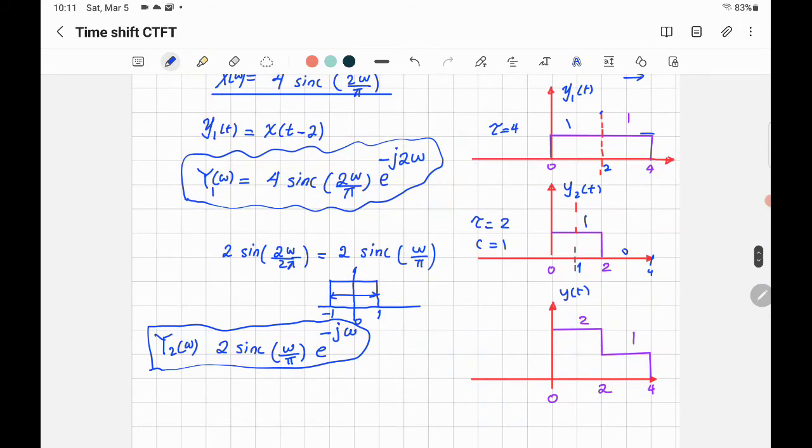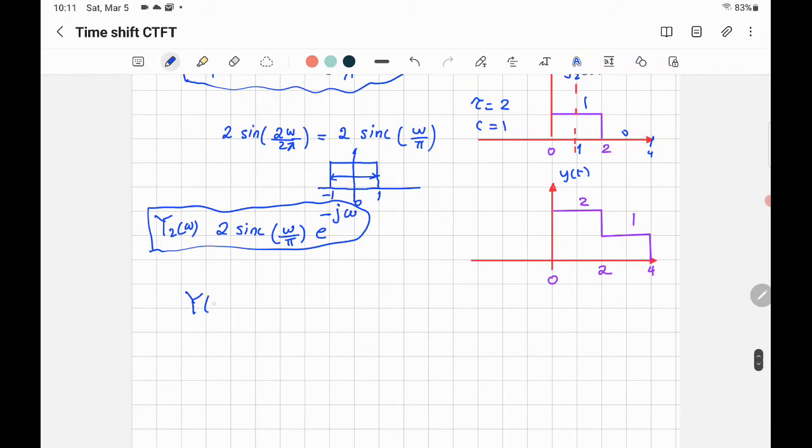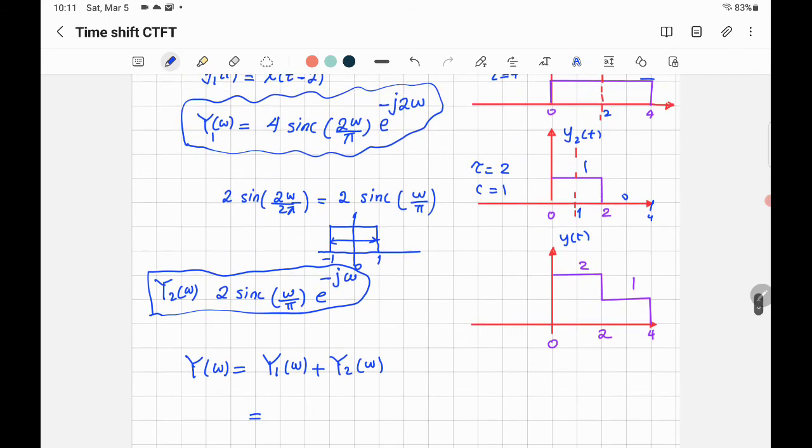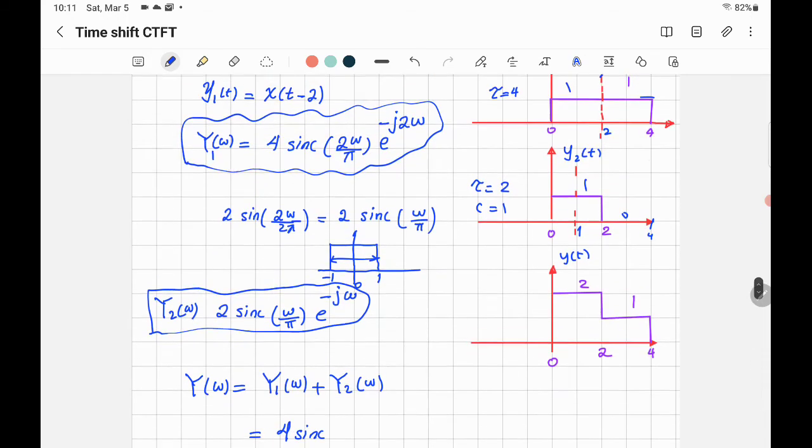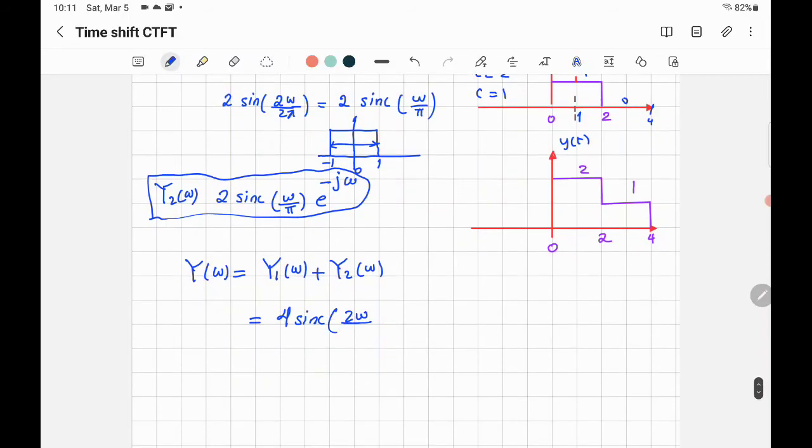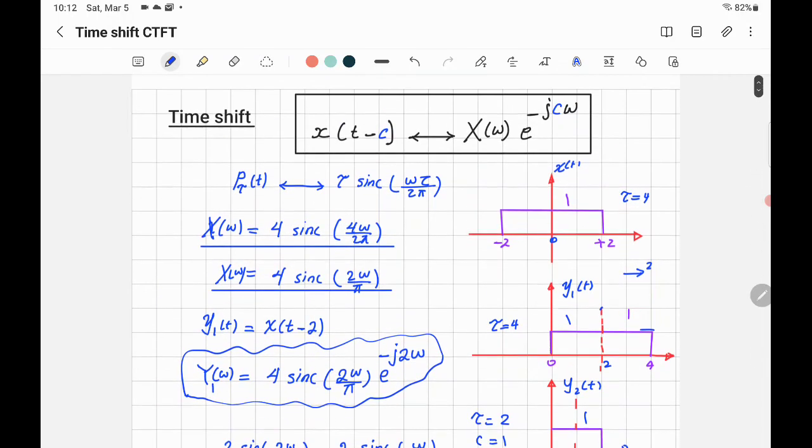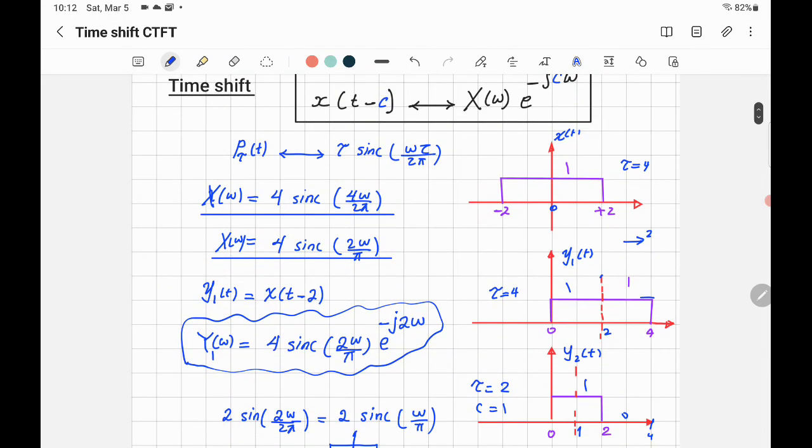And then you can find Y(ω) would be equal to Y₁(ω) plus Y₂(ω), which will be equal to the first one: 4 sinc(2ω/π) times e^(-j2ω) plus Y₂, which is equal to 2 sinc(ω/π) e^(-jω). So we applied here two things: time shift and linearity.